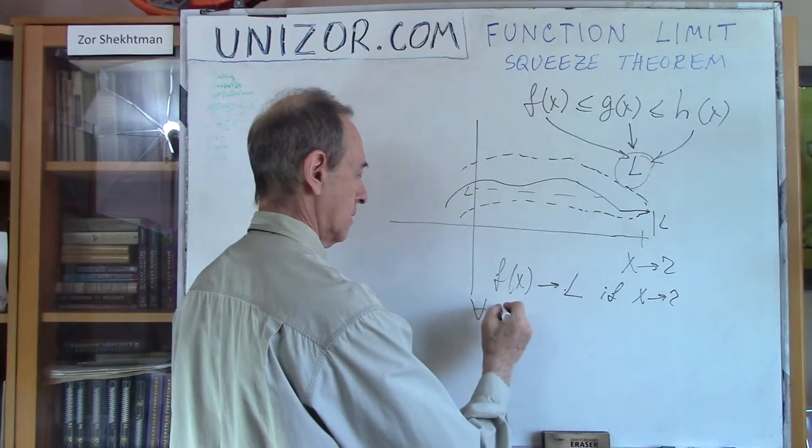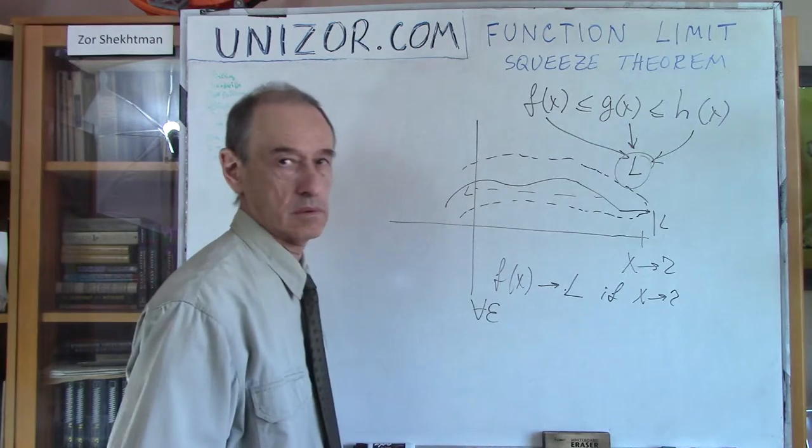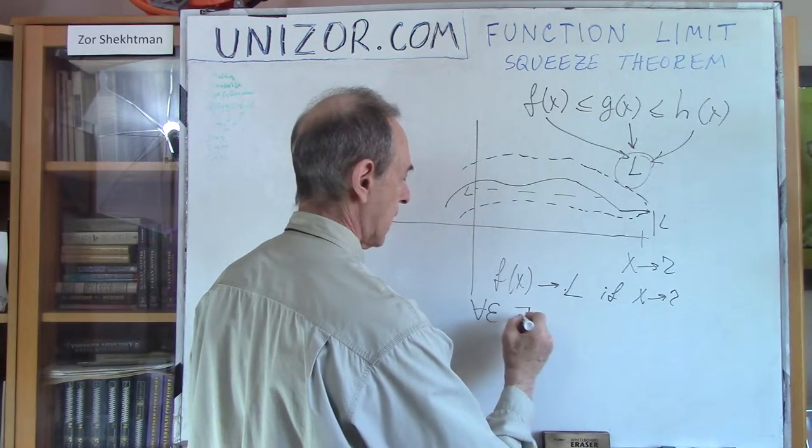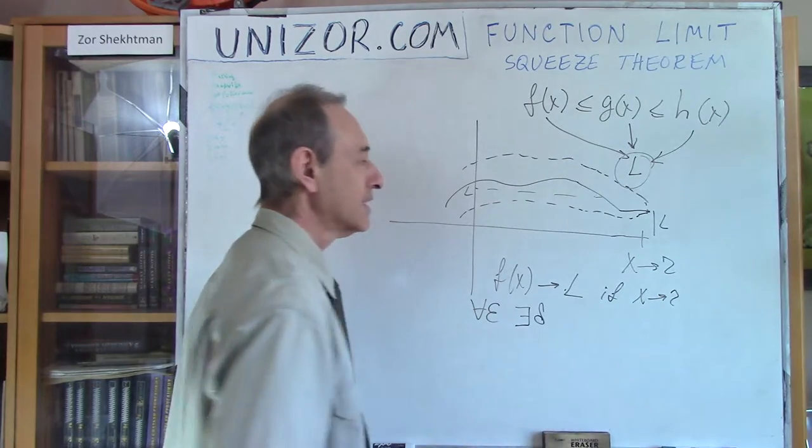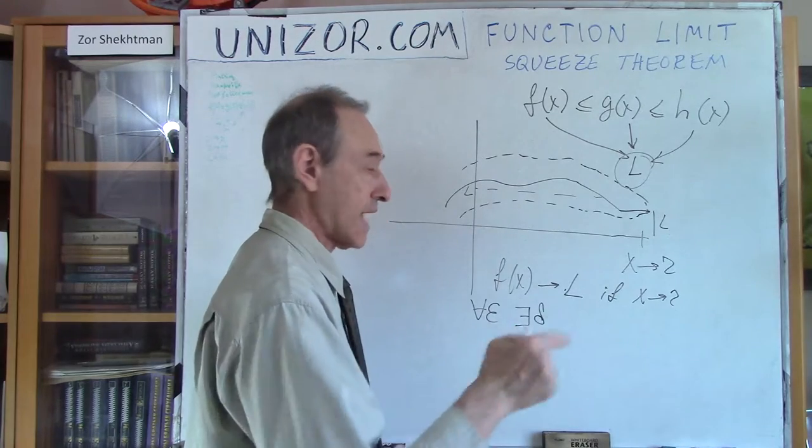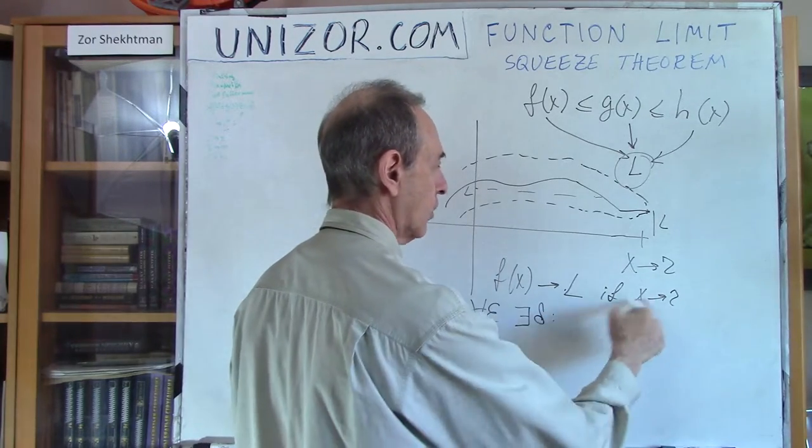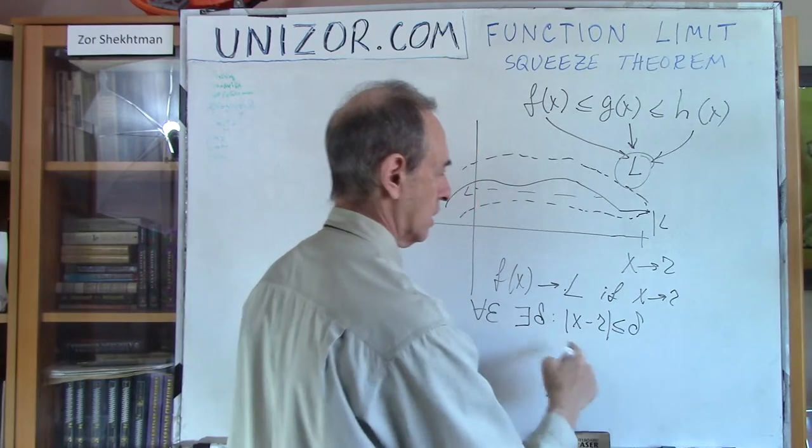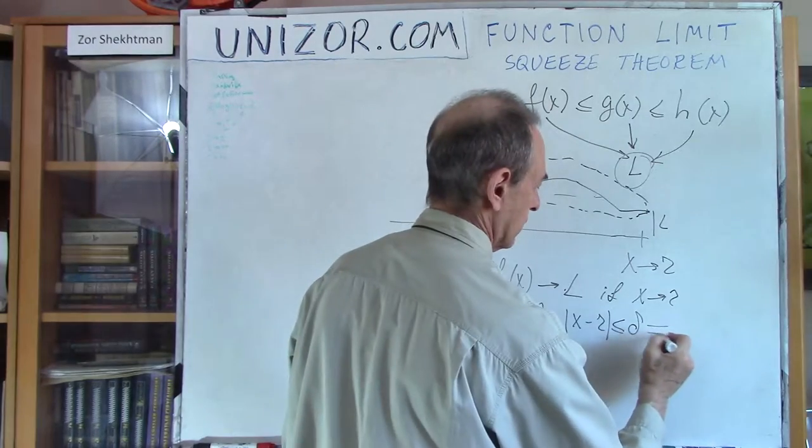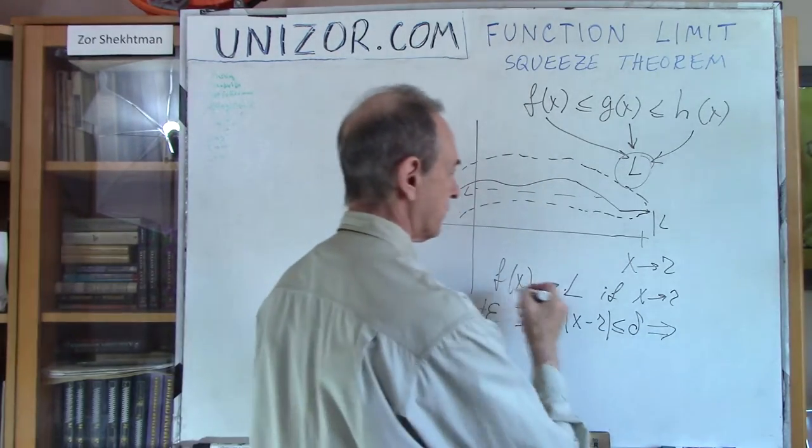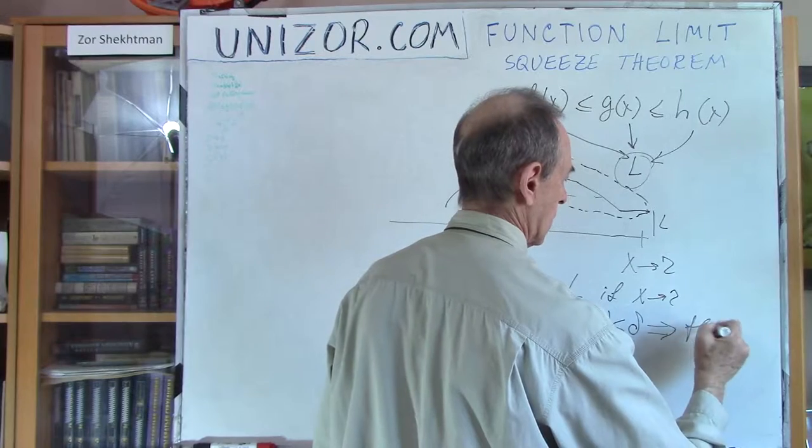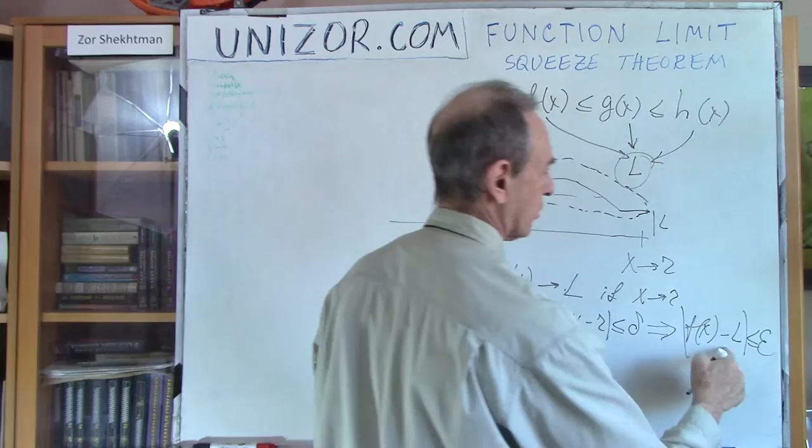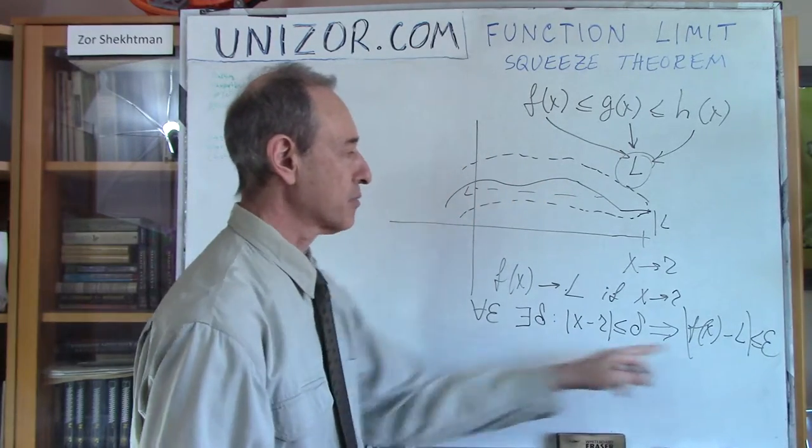For any epsilon positive epsilon however small there should be some kind of a delta neighborhood of the point r such that as long as my x is within delta neighborhood of r immediately follows from this that f at x would be within epsilon neighborhood of l. So for any however small neighborhood of l I can always find such neighborhood of r so as long as argument is close to r closer than delta then my function will be closer to l.